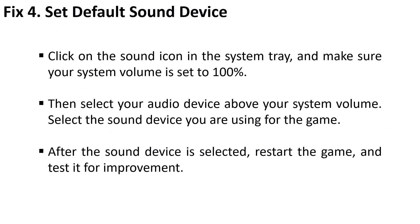Fix 4 is to set the default sound device. Click on the sound icon in the system tray and make sure your system volume is set to 100 percent. Then select your audio device above your system volume — select the sound device you are using for the game. After the sound device is selected, restart the game and test it for improvement.